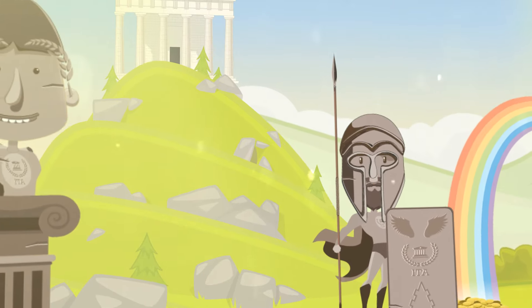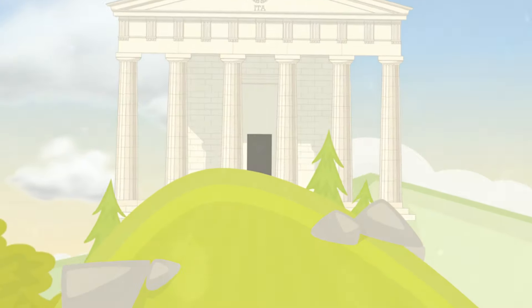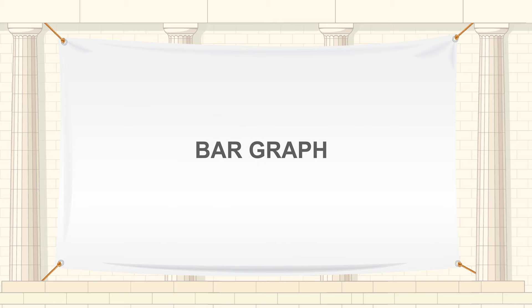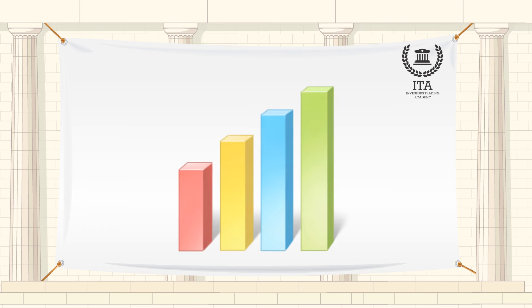Welcome to the Investors Trading Academy talking glossary of financial terms and events. Our word of the day is bar graph. A bar graph is a way to visually represent qualitative data. Qualitative or categorical data occurs when information concerns a trait or attribute and is not numerical.